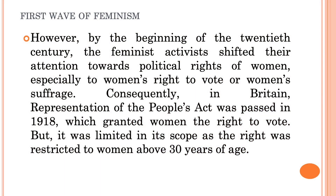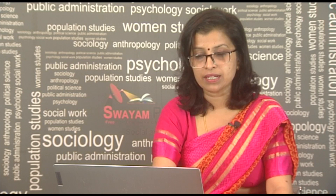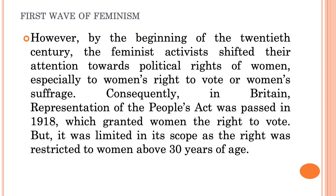By the beginning of the 20th century, feminist activists shifted their attention towards the political rights of women. The first wave of feminism was mostly concentrated on securing the political and legal rights of women, especially the right to vote. Consequently, in Britain, the Representation of the People's Act was passed and women gained the right to vote, though this right was quite restricted — only women above 30 years of age who owned property were allowed to vote.